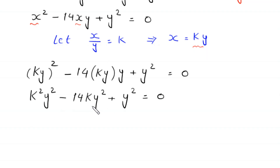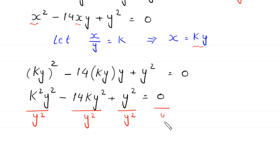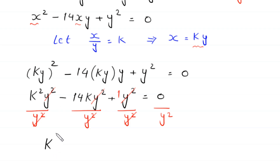Now we divide both sides of this equation by y squared. We divide each term by y squared: k squared y squared over y squared minus 14ky squared over y squared plus y squared over y squared equals 0. Each y squared cancels, leaving k squared minus 14k plus 1 equals 0.